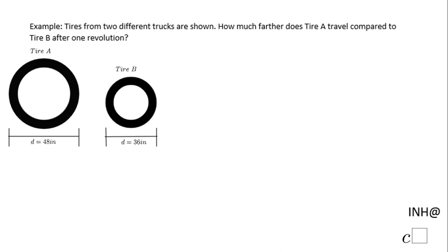Welcome back! I need help at C Square. In this example, we have two tires, Tire A and Tire B. How much farther does Tire A travel compared to Tire B after one revolution? You'll notice Tire A has a diameter of 48 inches and Tire B has a diameter of 36 inches.